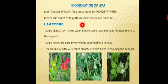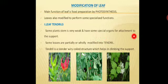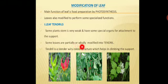The first modification is leaf tendril. A tendril is a modification where the leaf becomes a small, weak stem-like structure. Some plants have very weak stems and need special organs for attachment to support — this is called a tendril. Some leaves are partially or wholly modified into tendrils, which are only meant for climbing support.